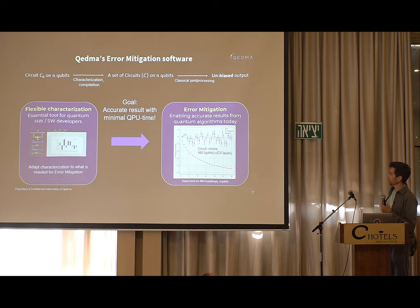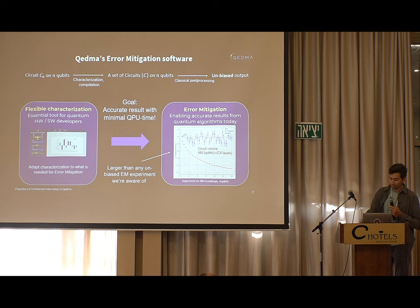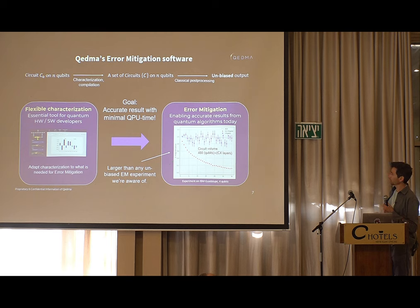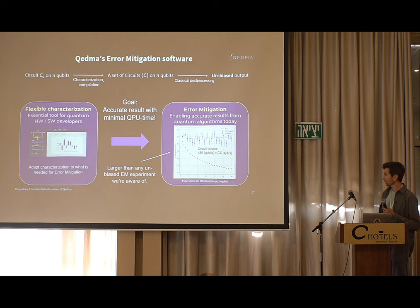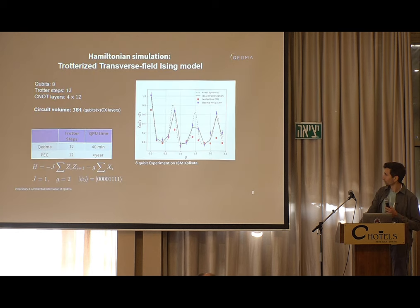What we guarantee is the state-of-the-art trade-off between circuit volume, two-qubit gate infidelity, and QPU time. A fun fact: this circuit at volume 480 is larger than any unbiased error mitigation experiment we're aware of, and it's a simple experiment on 4 qubits — what makes it large volume is the depth. Today we've done experiments which are larger, and this is on a standard machine with no uncommonly low error rates.